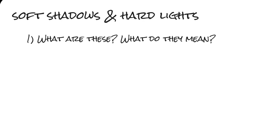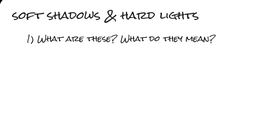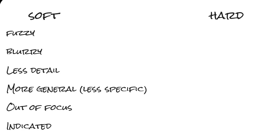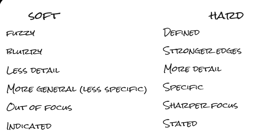So number one — what are they? When we talk about soft edges it's fairly obvious: we mean fuzziness, a lack of detail, slightly blurry — you could also call it more general, less specific, or even out of focus. By hard edges I mean more definition, stronger sharper edges, often more detail — you could also call it more stated or more in focus.